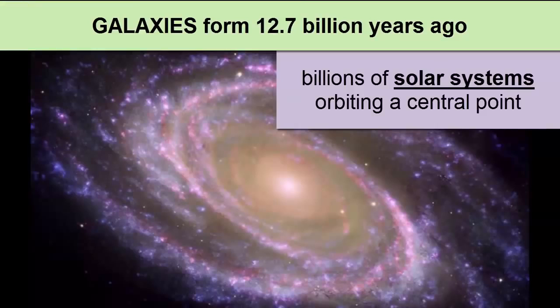Each system will feel gravitational attraction to the other systems around it, and they will clump together in collections of solar systems called star clusters or galaxies, depending on the number of stars and shape of the collections.